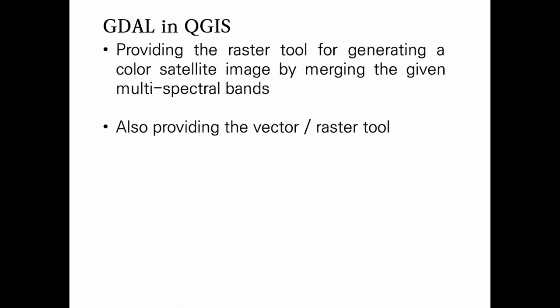In this lecture, you will use the GDAL library for generating a color satellite image by merging the multispectral bands. The GDAL library provides very good raster tools for generating color satellite images. Unlike the SCP plug-in used in the previous lecture, the GDAL library is not a plug-in — it is the originally installed library in QGIS, and it provides very efficient vector and raster analysis tools. I generally recommend using the GDAL library in QGIS for your work.